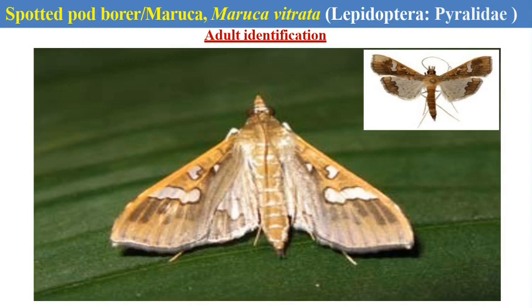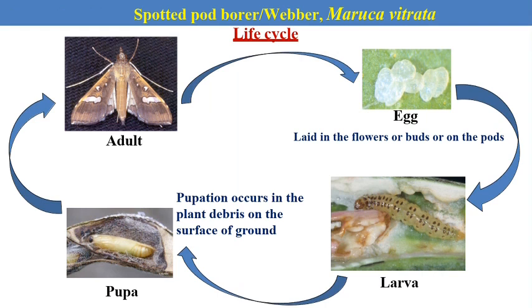The next pest is the spotted pod borer, also called Maruka — scientific name Maruca vitrata. It is also a lepidopteran pest. After male-female mating, the female moth of Maruca lays their eggs in flowers, buds or on the pods. After hatching, the larva or caterpillar emerges — and the caterpillar is the damaging stage of this spotted pod borer. After larval development, pupation occurs in plant debris on the surface of the ground.